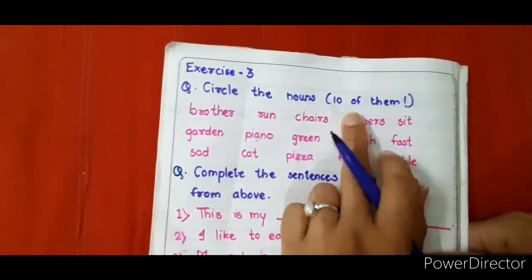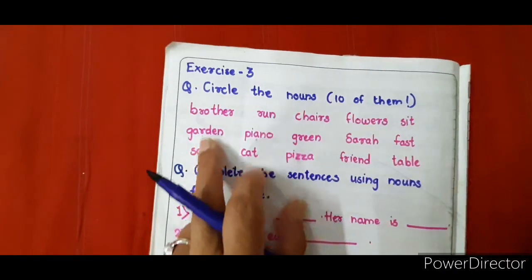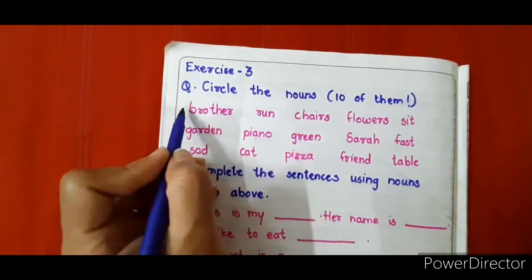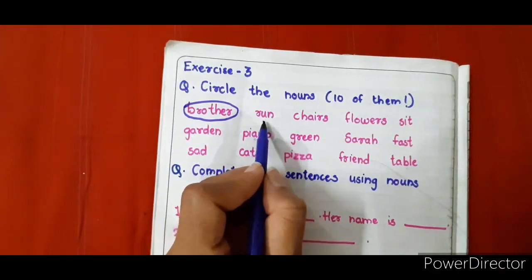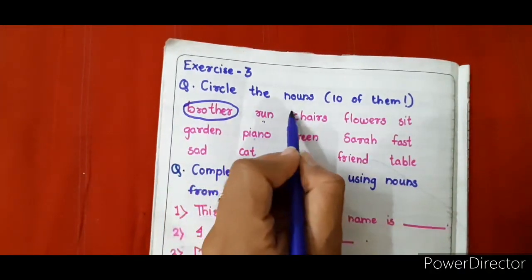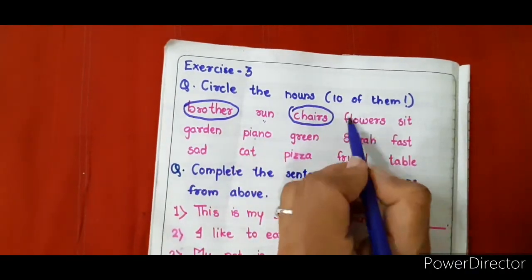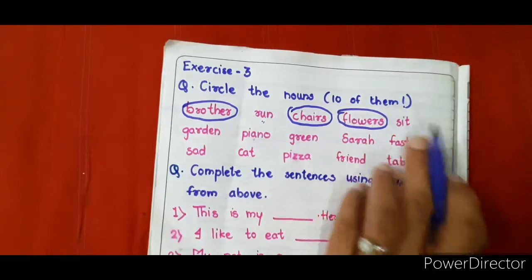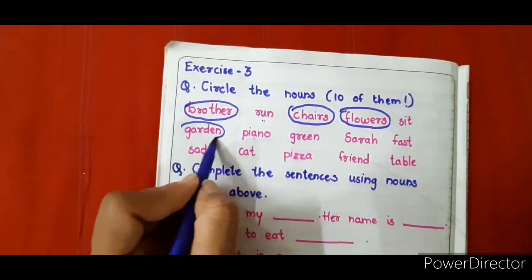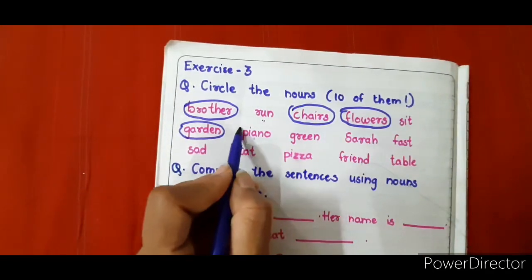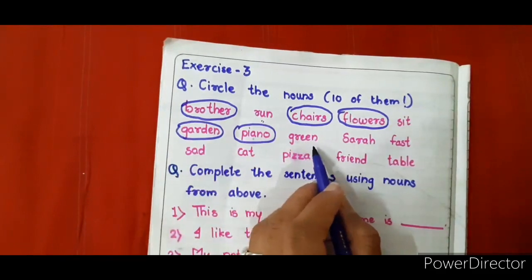Circle the nouns — ten of them. Brother: yes, it is a noun. Run: no, it is not a noun. Chair: yes, it is a noun. Flowers: yes, they are nouns. Sit: no, it is not a noun. Garden: yes, it is a noun. Piano: of course it is a noun, as it is a name. Green: is not a noun, it is an adjective.